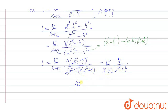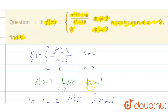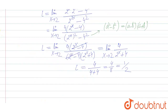Now this is a simple form — it is not a 0 by 0 form anymore. So we can simply put x equal to 2. This becomes 4 divided by 2 squared plus 4, that is 4 divided by 8, equal to 1 by 2. So the value of k is equal to 1 by 2. k equal to 1 by 2 is the answer.